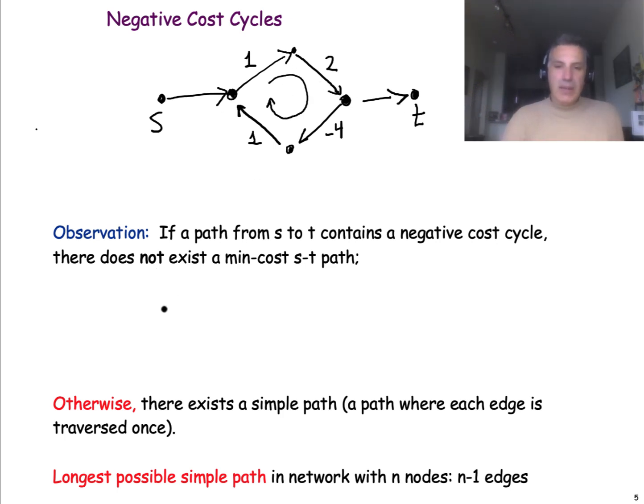So let's consider now the opposite case that there is a path from S to T, but there is no negative cycle in that path. What does that mean? There must be a sequence of edges that we can traverse to go from S to T without actually traversing any edge twice.